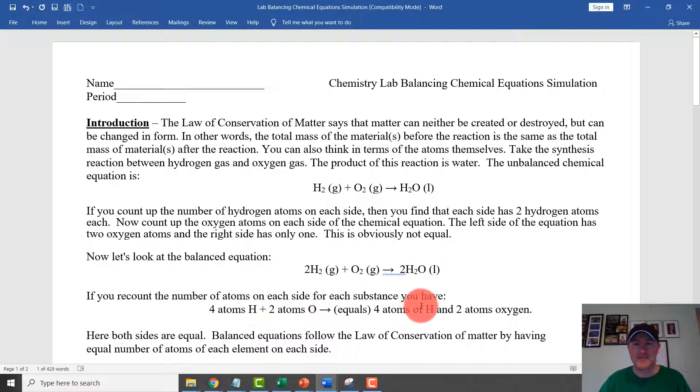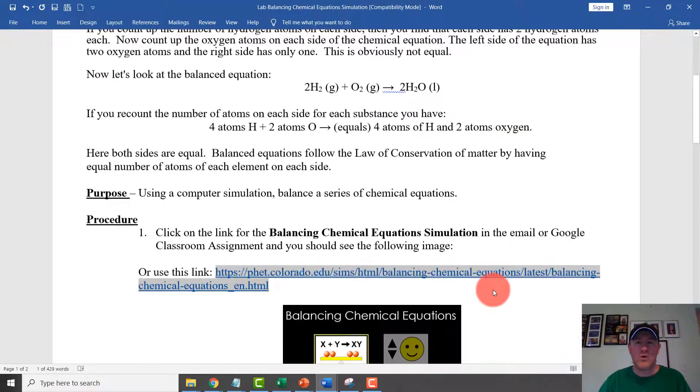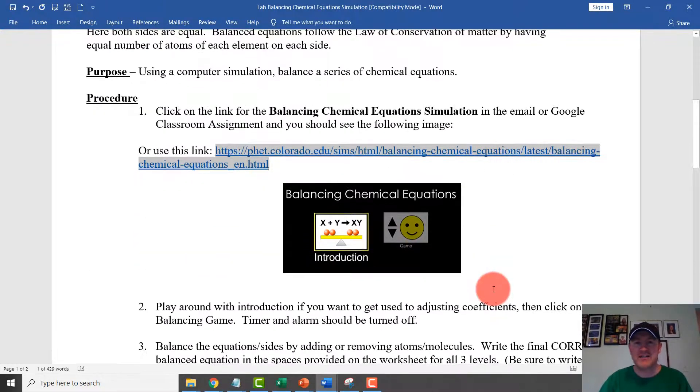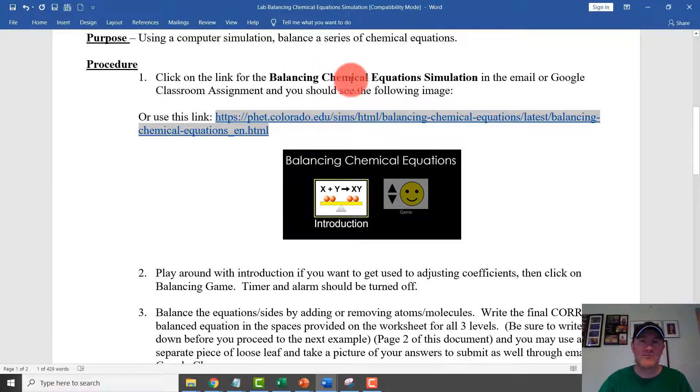So again, four hydrogens on both sides. Four atoms of hydrogen, four atoms of hydrogen. If we look, two atoms of oxygen on the left side or our reactant side and two atoms of oxygen on our product side. So what we're doing here is a simulated activity. And when you use that link, we're going to be dealing with a website, Balancing Chemical Equation Simulation.